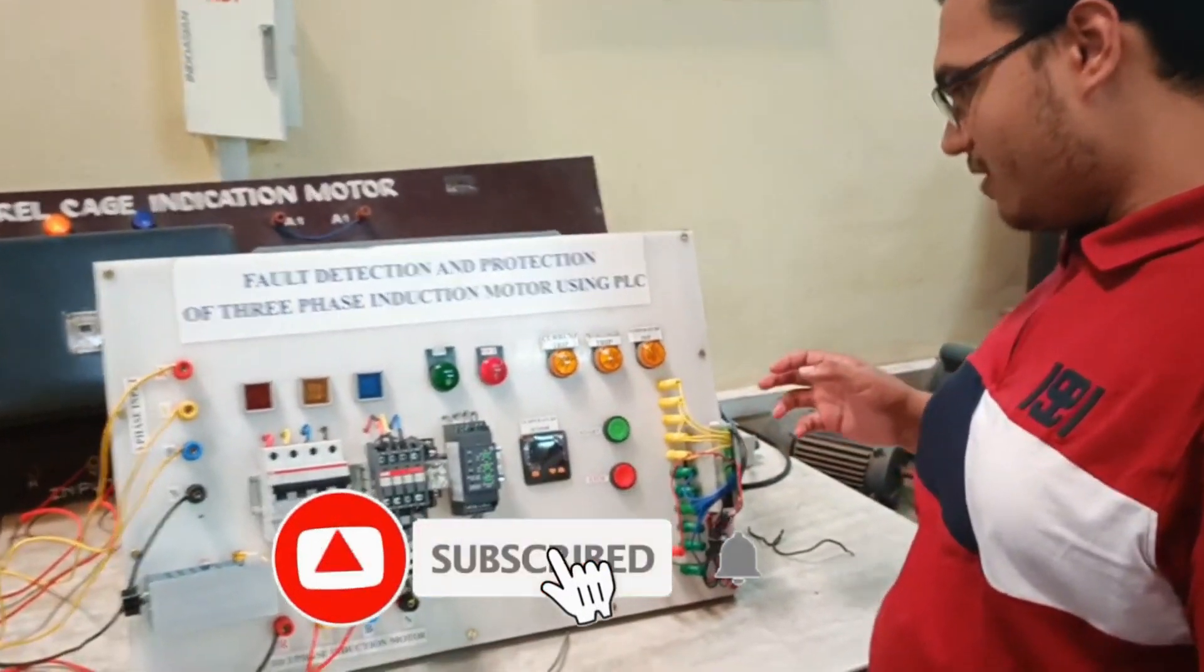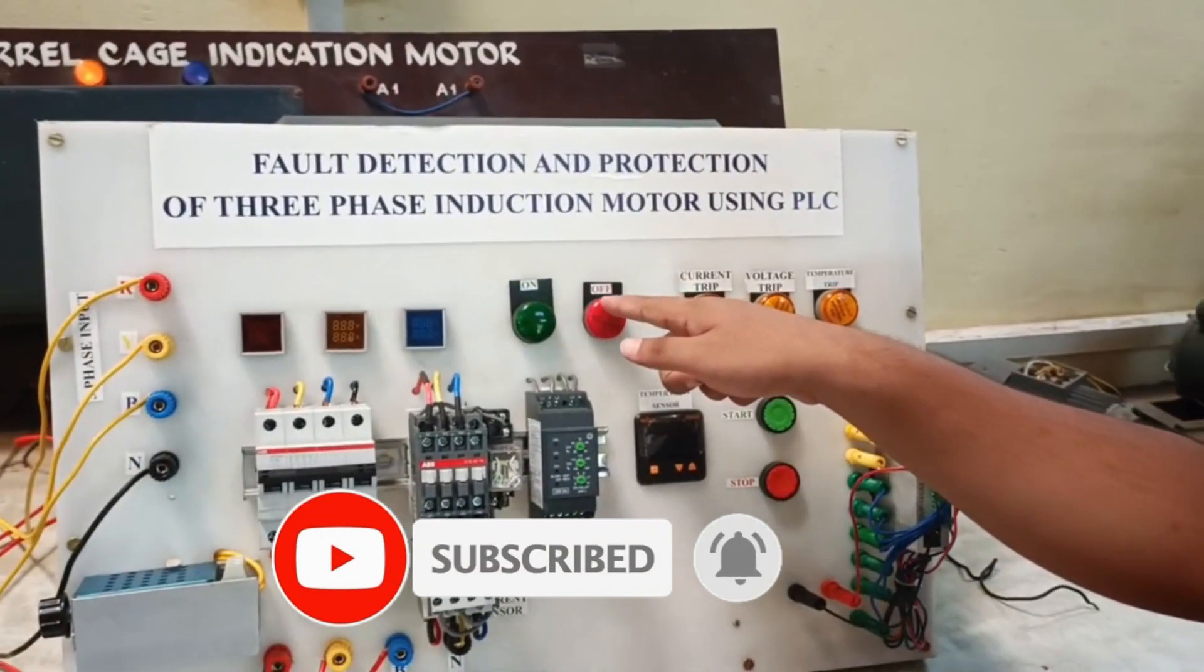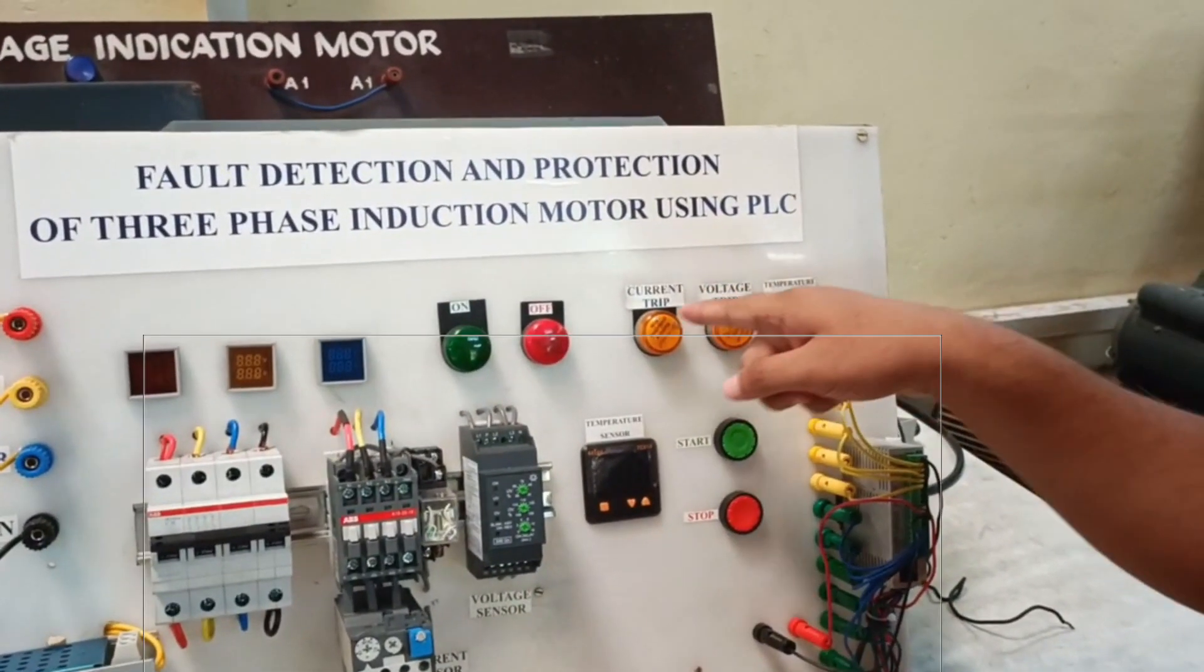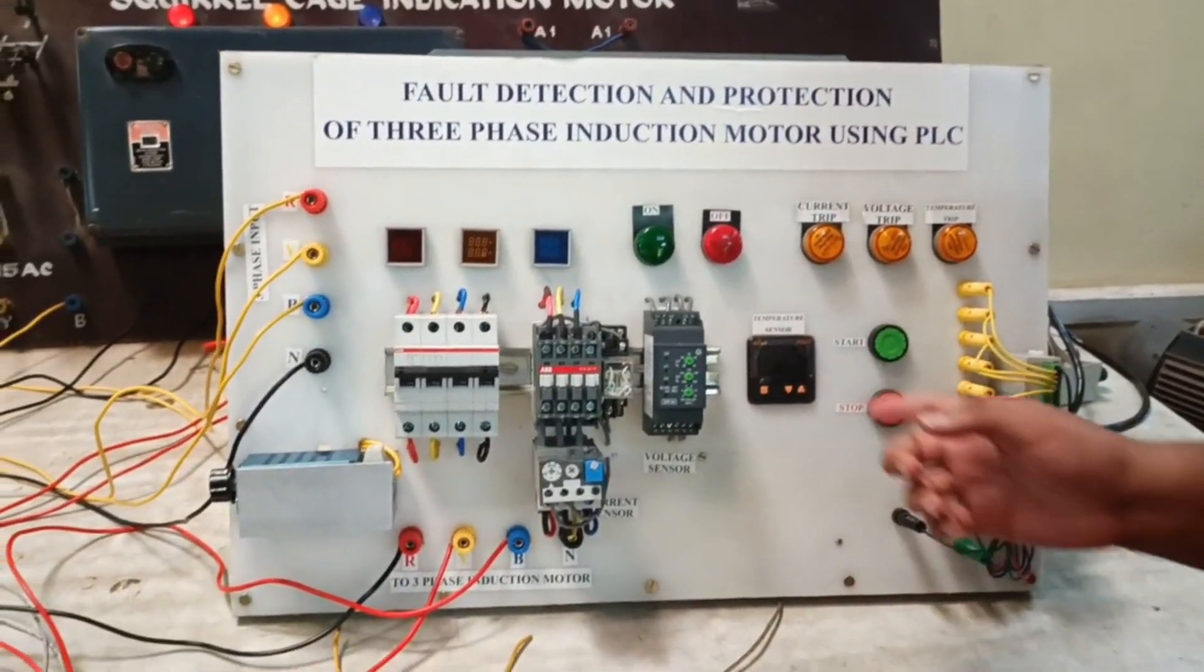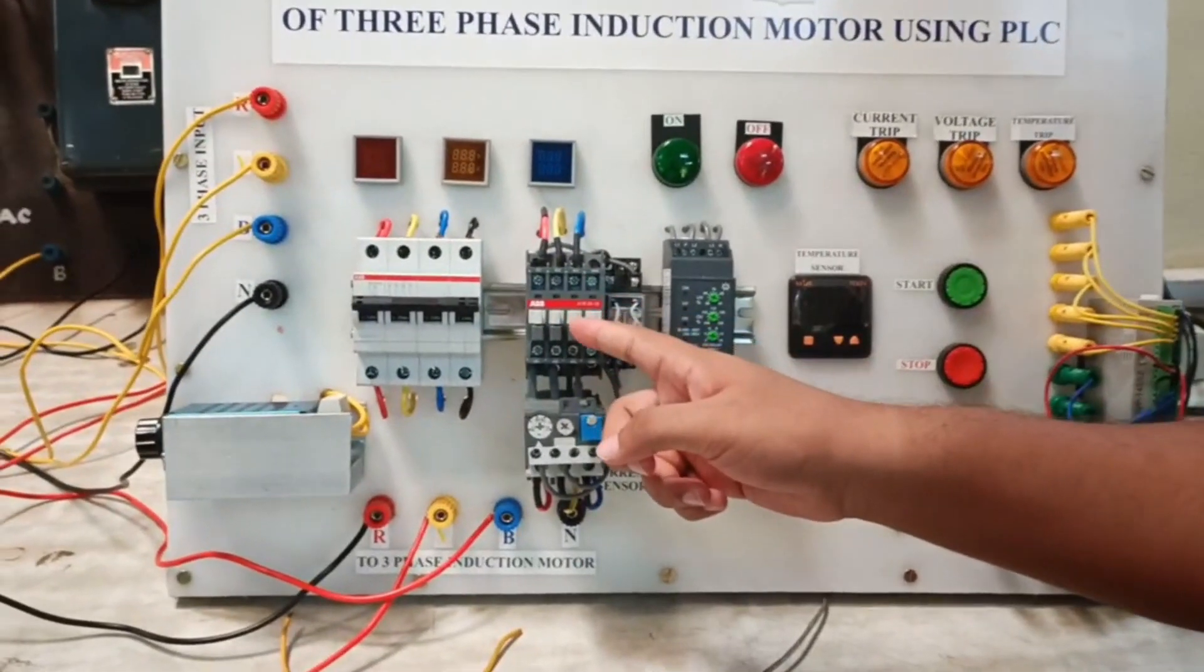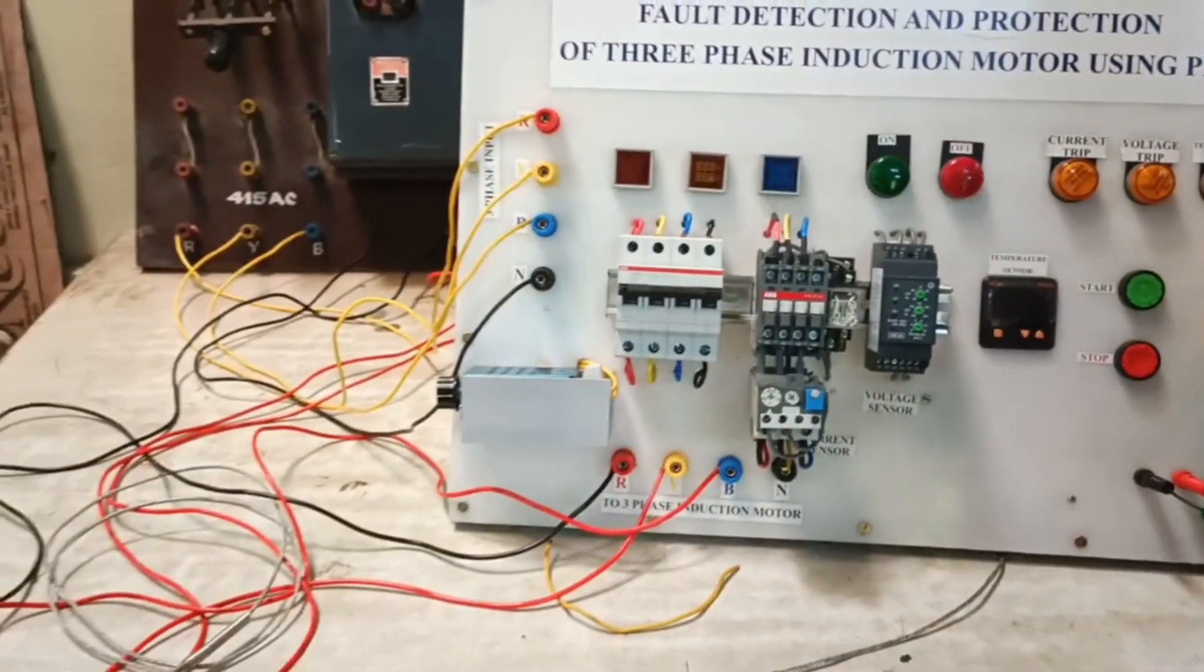So this PLC we are using 6 outputs, 2 for the on and off indicators and 3 for the current fault, voltage fault and temperature fault indicators. Then the last output goes to this 3 phase AC contactor. This contactor is used to turn off the induction motor in case of any of these faults.